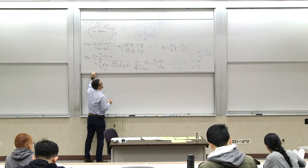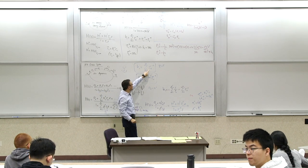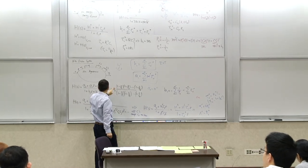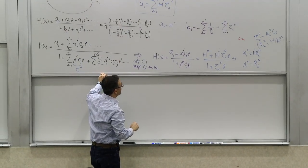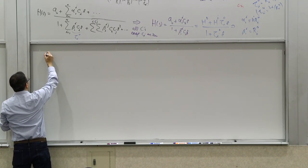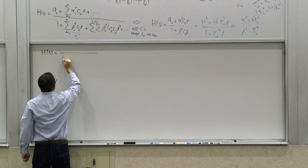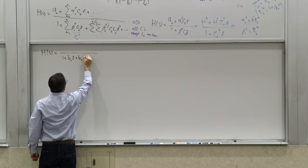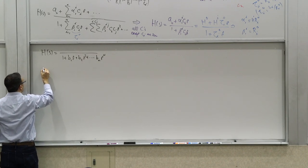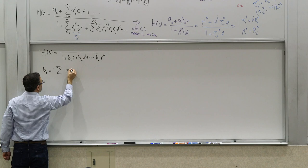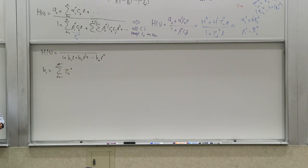Before the break we saw that the first order term in the denominator of a transfer function in general can be written as the sum of all the zero-value time constants of the system. We also saw that the first term in the numerator is given by a related expression, which we'll return to later. The key result was that for an nth order system, b1 is given by the sum of all the zero-value time constants, meaning you set all the other reactive elements to zero value.